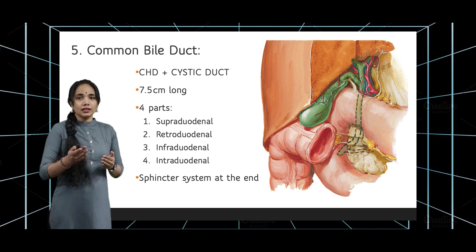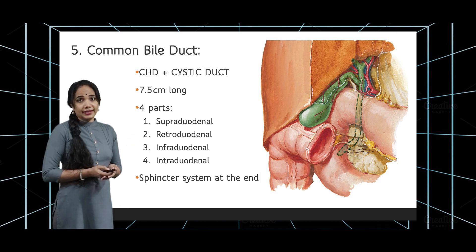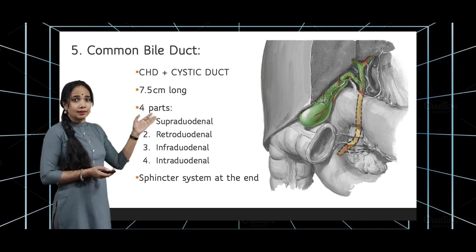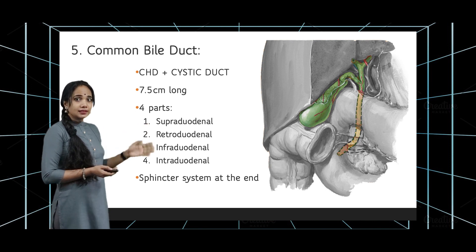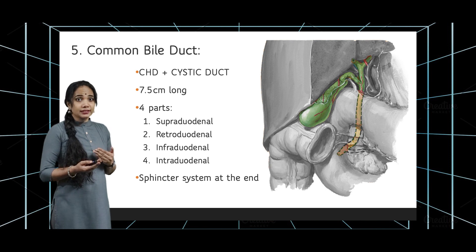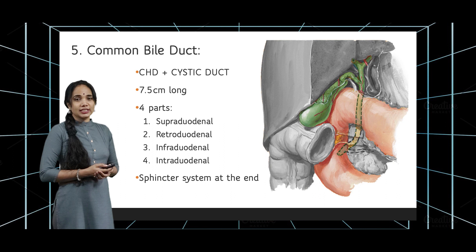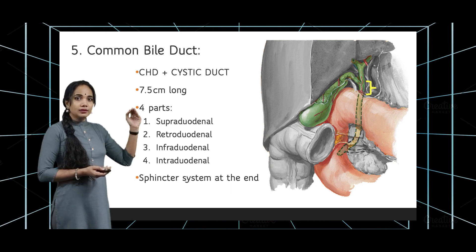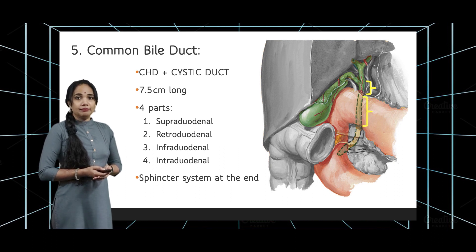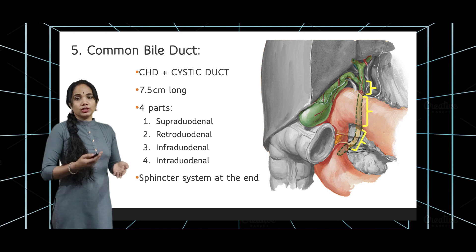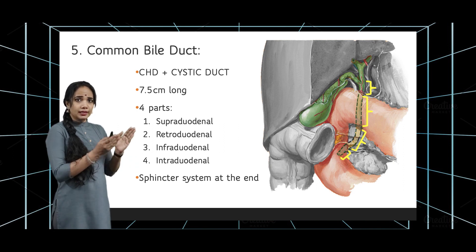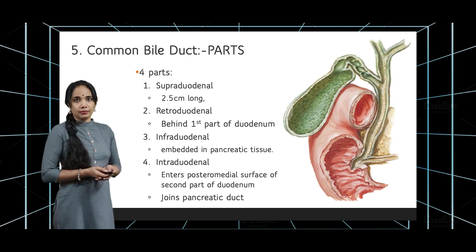Let us see the four parts one by one. This diagram shows the common bile duct as it passes behind the duodenum. The part above the first part of the duodenum is the supraduodenal part. Behind the first part of the duodenum is the retroduodenal part — retro meaning behind. Below the duodenum is the infraduodenal part, and finally the small part of the common bile duct entering and lying within the wall of the duodenum is called the intraduodenal part.